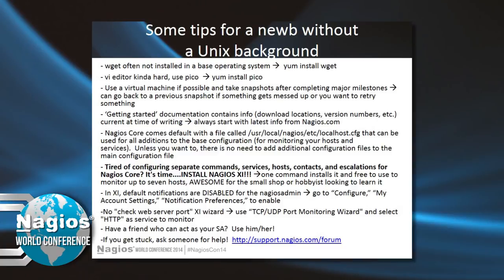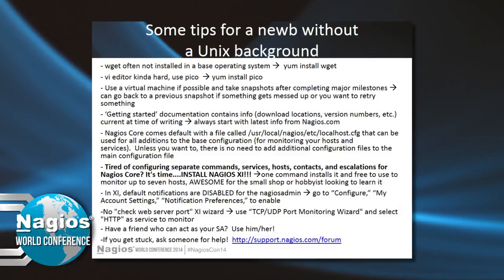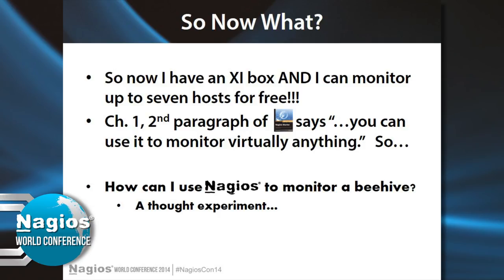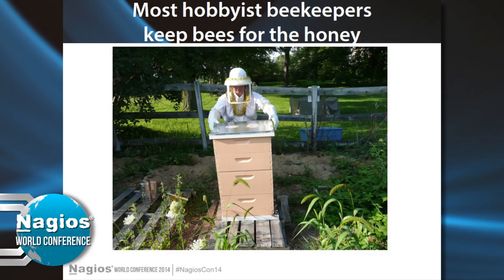So, some tips and tricks: the VI Editor — I didn't like it. Basically, just go straight to Nagios XI. Now that I have XI, Chapter 1 of the Instant Nagios Starter says you can use it to monitor virtually anything — so I said, what can I do with a beehive?